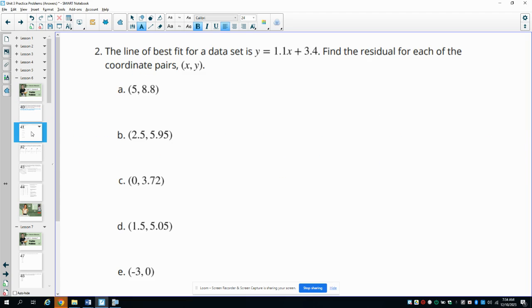Number two, the line of best fit for a data set is Y equals 1.1X plus 3.4. Find the residual for each of these coordinates. So this means that we have the actual data value. What we need to do is figure out what the estimated value is. We find the estimated value by plugging our X into this line and figuring out the Y that it gives us back.